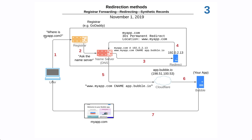When the user types myapp.com into their search bar, the computer asks your registrar — in this case GoDaddy — where the name servers are located. They find the name server and ask where to find myapp.com. myapp.com is actually hosted on a very small server owned by the registrar, and all this server does is redirect. The user's computer issues a request to this small server, which responds: go to www.myapp.com — permanent redirect.